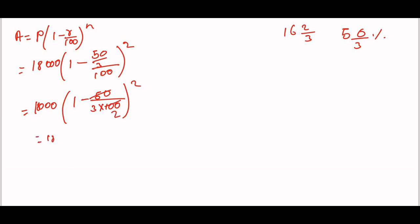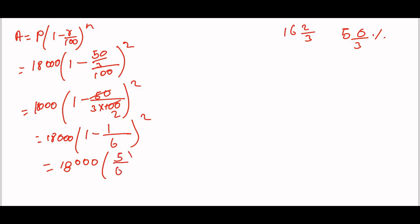So 18,000 into 1 minus 1 divided by 3 into 2, which is 6, the whole squared. So 18,000 into 5 by 6 the whole squared. That is 18,000 into 5 by 6 into 5 by 6. The final answer calculated is ₹12,500.